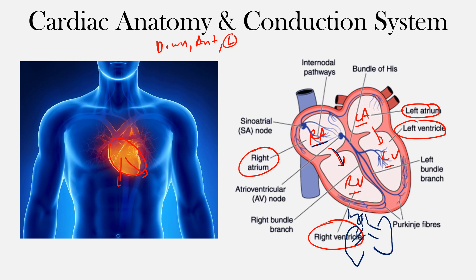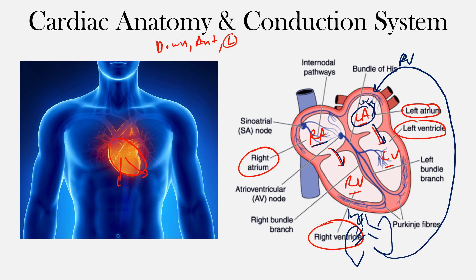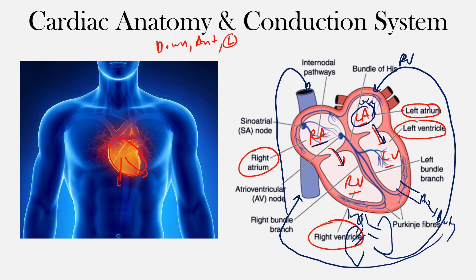From the pulmonary artery, blood goes to the lungs where it gets oxygenated, and then comes back to the left side of the heart through the pulmonary veins into the left atrium. From the left atrium to the left ventricle, and from the left ventricle it goes out the aorta to the body, where the muscles take up the oxygen.